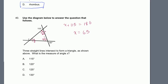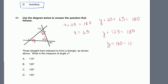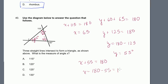y plus 60 plus 65 must equal 180 because the angles in a triangle add up to 180. So y plus 125 equals 180, giving y equals 55 degrees. Now x is supplementary to y, so x plus 55 equals 180, which means x equals 180 minus 55, which equals 125 degrees. That's choice C.